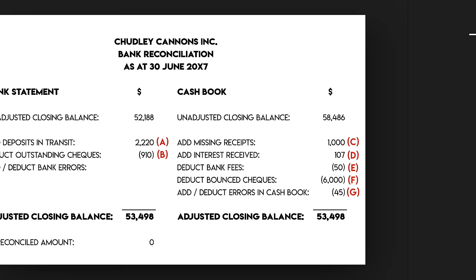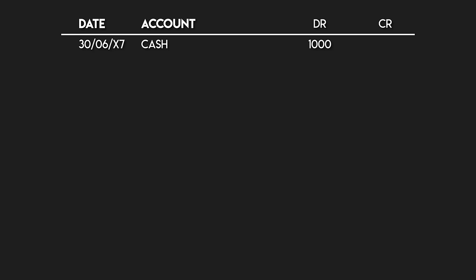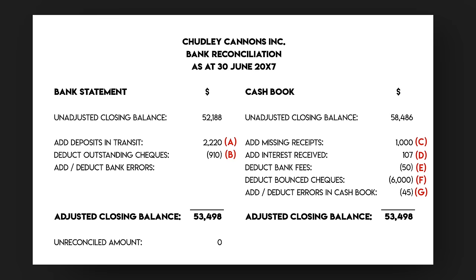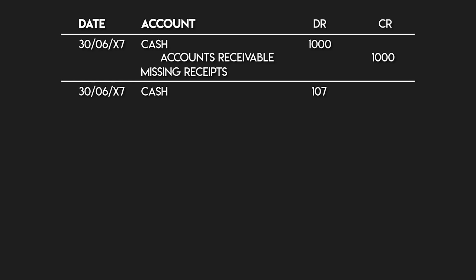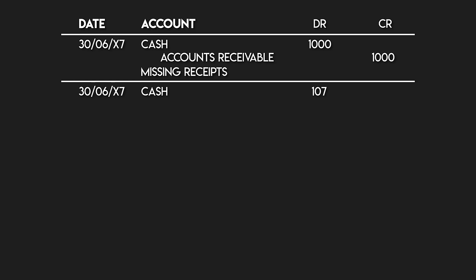If you're feeling unsure about journal entries, pause this video and check out the one I made explaining them. We need to lay out our journal entry template with date, account, debit and credit columns. We'll use the 30th of June for all entries because it's the last day of the month, making these month-end correcting journals easy to spot in the general ledger. One side of each transaction has to hit the cash account since these are all cash book adjustments. Transaction C was for missing receipts of $1,000 — we debit cash by $1,000 and credit accounts receivable because a customer has paid us. Transaction D is interest received of $107 — debit cash, and credit interest income, which is a form of revenue.